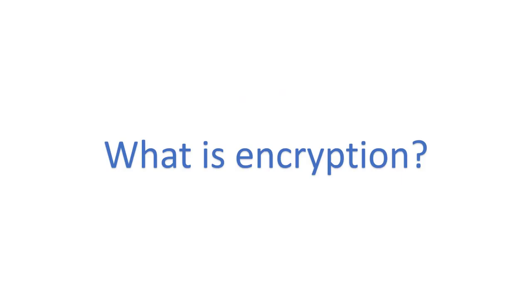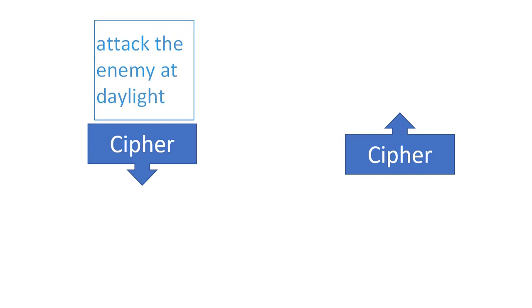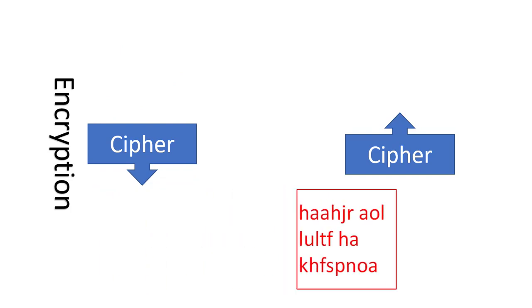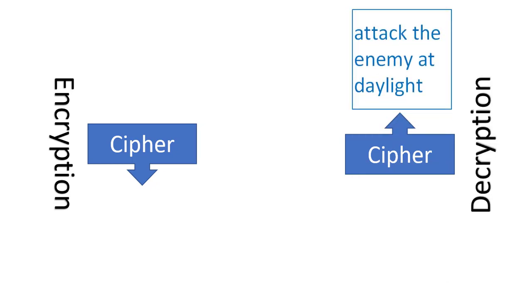So what is encryption? Encryption is a process that uses a cipher to convert a message in a special way so that if someone intercepts the message, they cannot easily read it. As long as the person receiving the message knows how the message was converted with the cipher, they can read it. We call that process decryption.